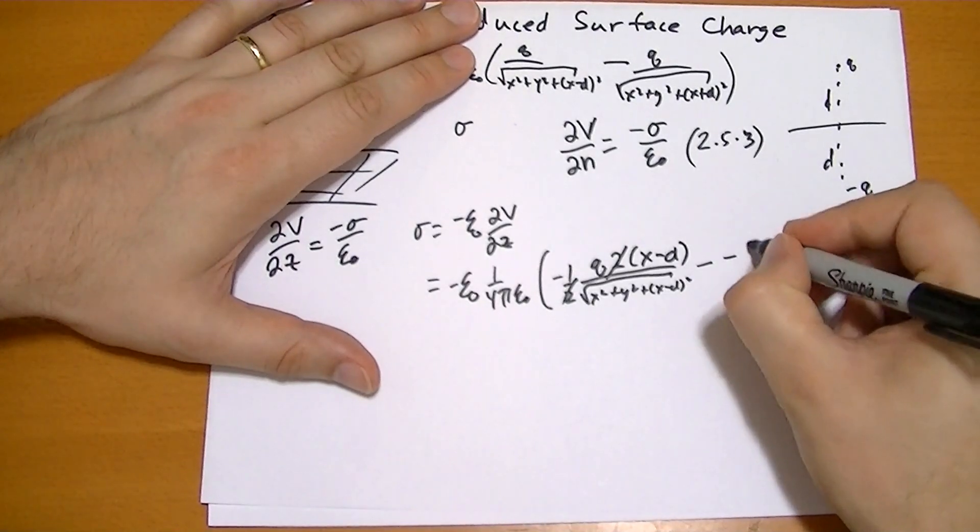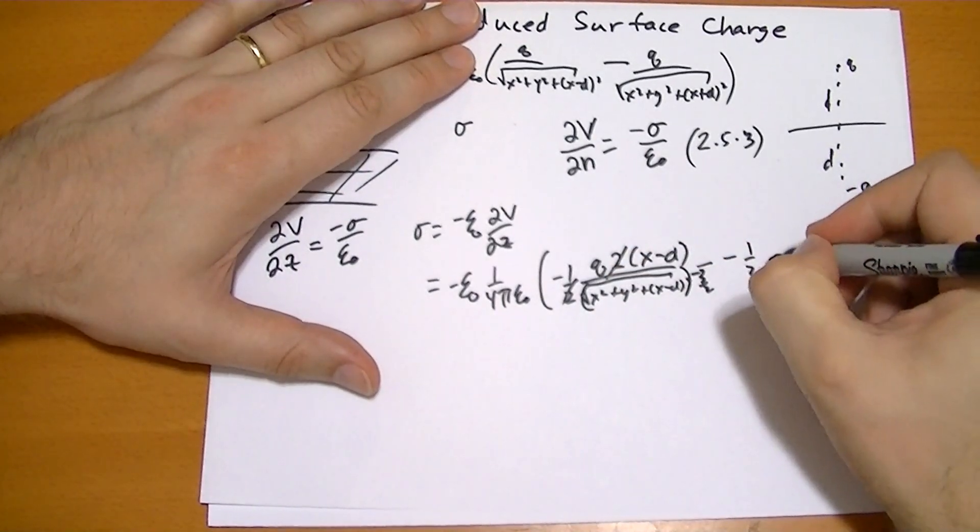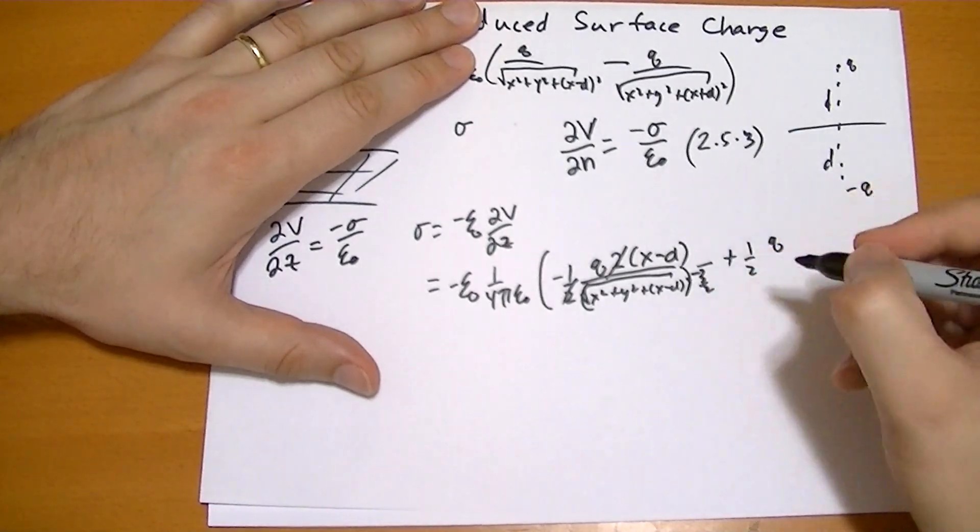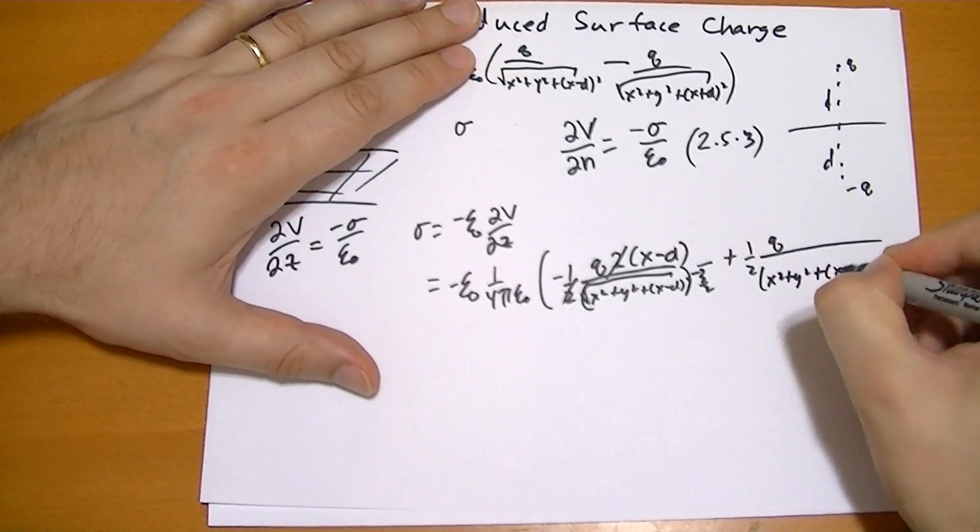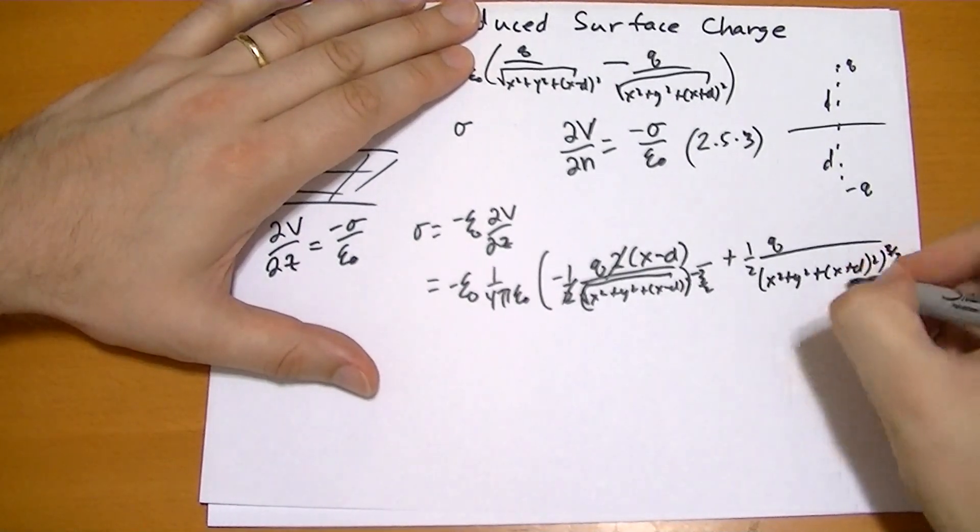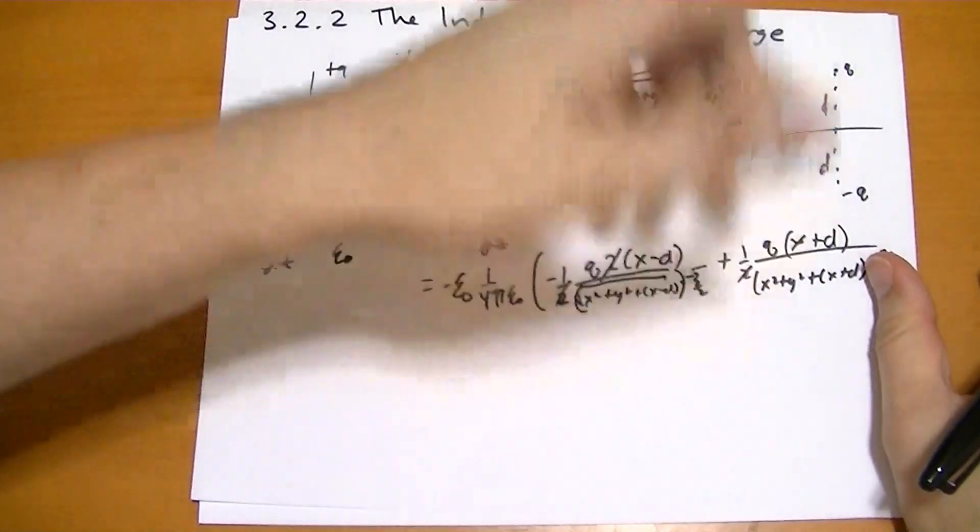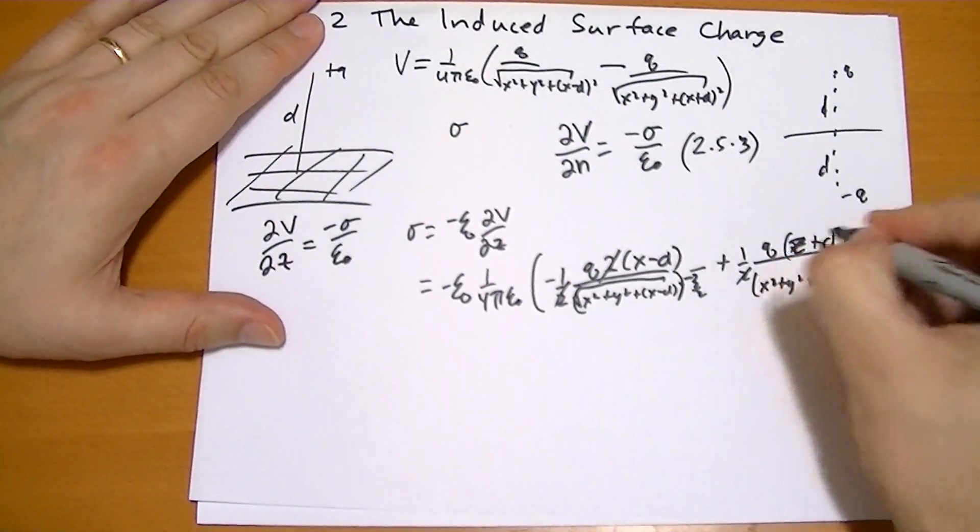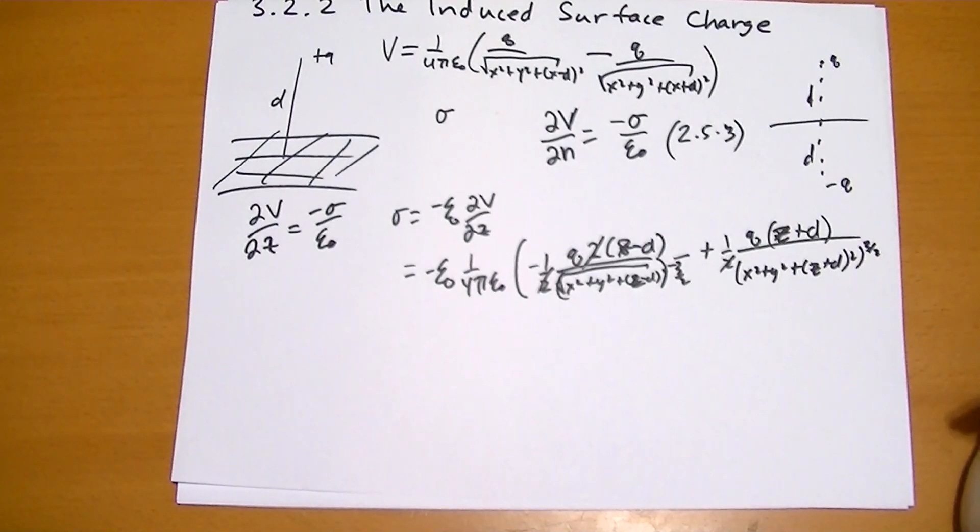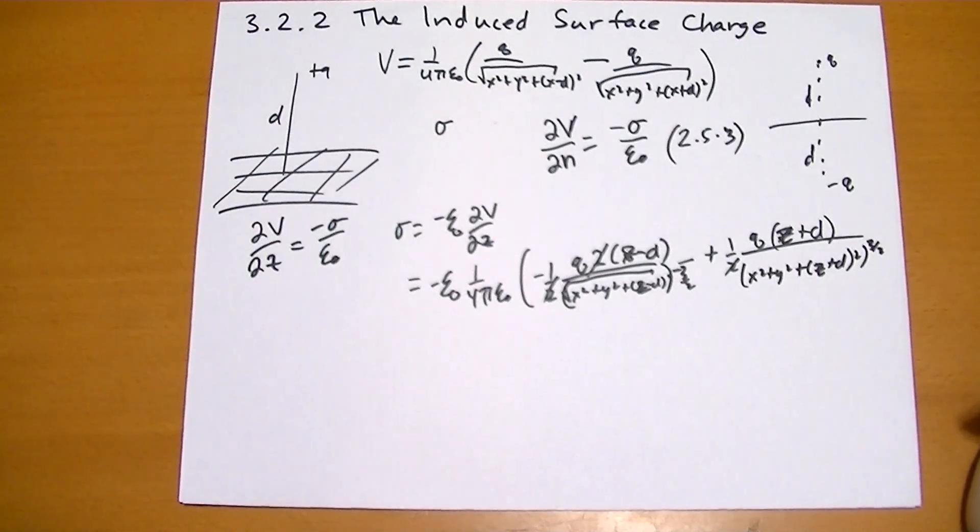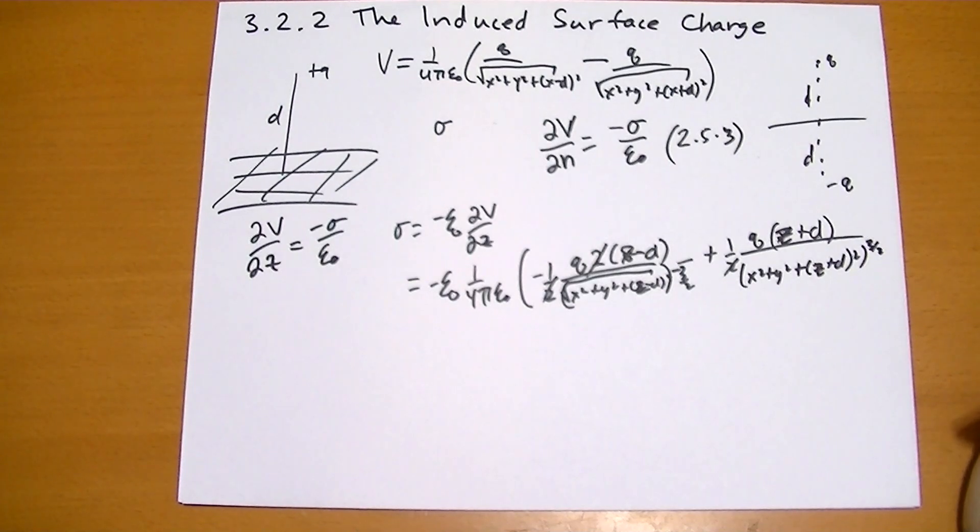And we subtract negative one-half. This is actually to the negative three-halves. So now we have negative one-half times minus q, so a plus, basically. This is messy, I'm sorry about this. x squared plus y squared plus z plus d squared to the three-halves. We take the derivative of this, so that's 2z plus d. I'm excited about the conclusion of this theorem, and we're going to talk more about its implications.